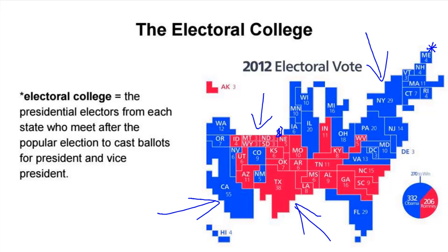In Nebraska, there are three congressional districts. So if you're the statewide winner, you immediately get two electoral votes. If you win all three congressional districts, you get all five electoral votes from Nebraska. However, if you only win one congressional district and your opponent wins two, it's divided: as the statewide winner you get two plus one for a total of three, while your opponent receives two.